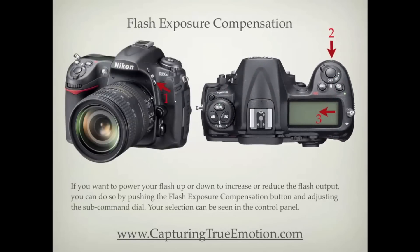If you want to power your flash up or down to increase or reduce flash output, you can do so by pushing the flash exposure compensation button and adjusting the sub command dial. Your selection can be seen in the control panel.